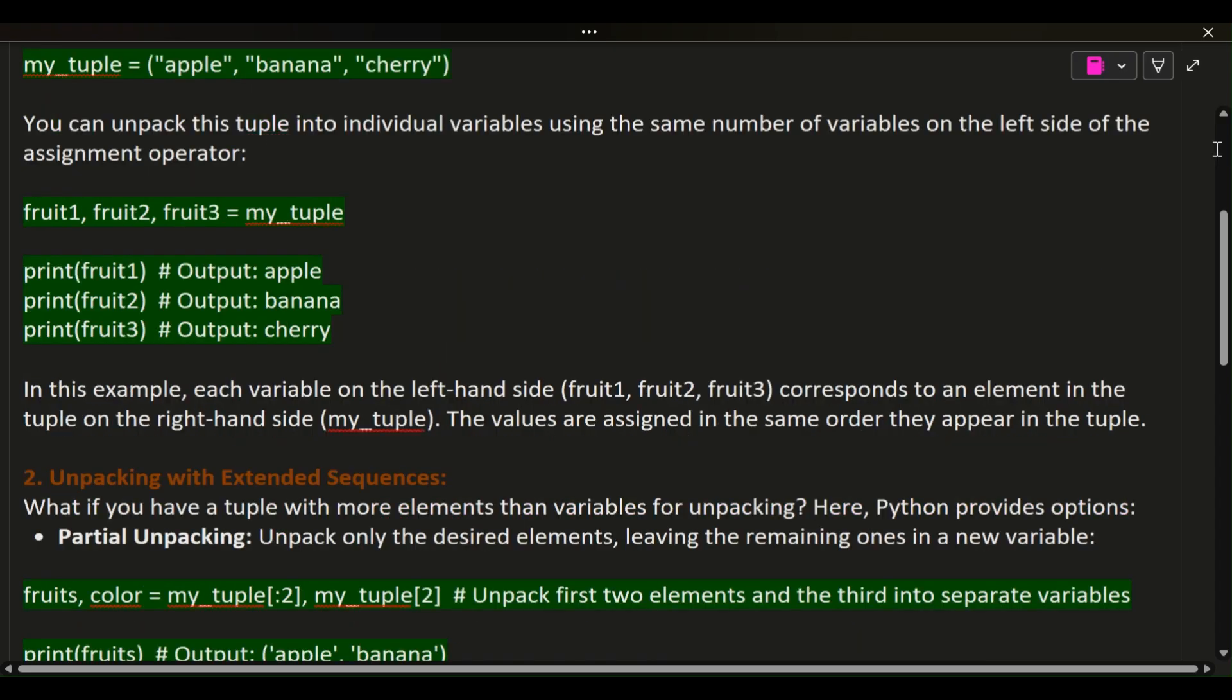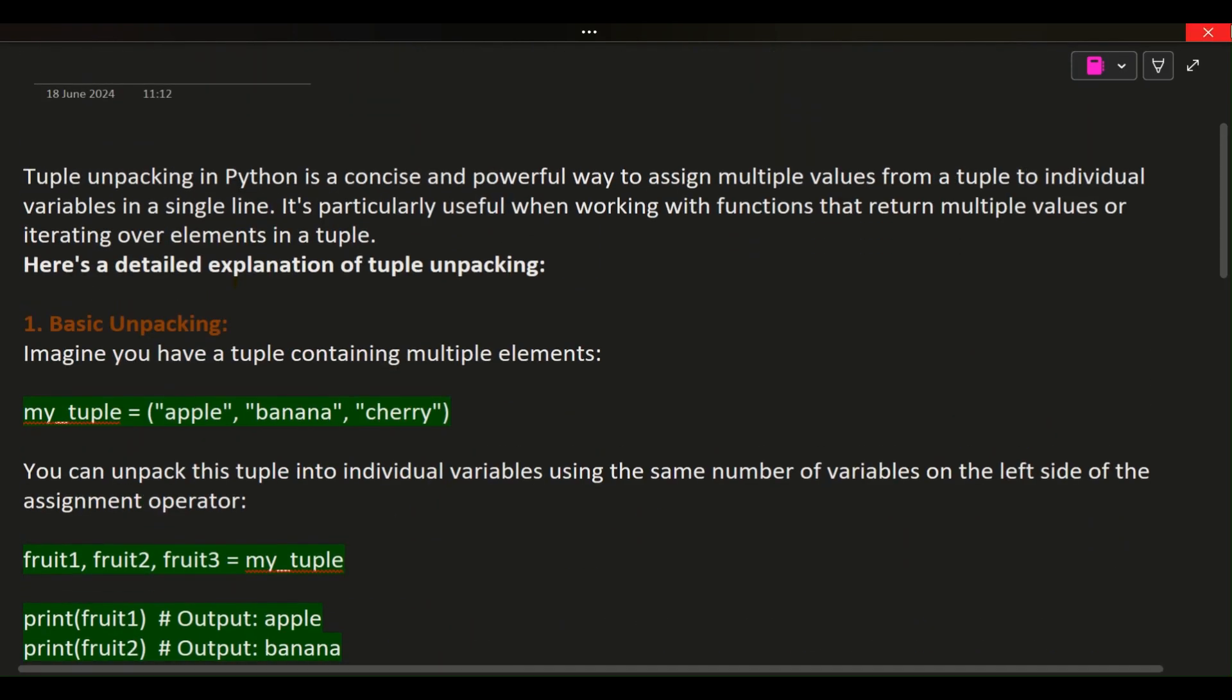Tuple Unpacking in Python is a concise and powerful way to assign multiple values from a tuple to individual variables in a single line. It's particularly useful when working with functions that return multiple values or iterating over elements in a tuple.